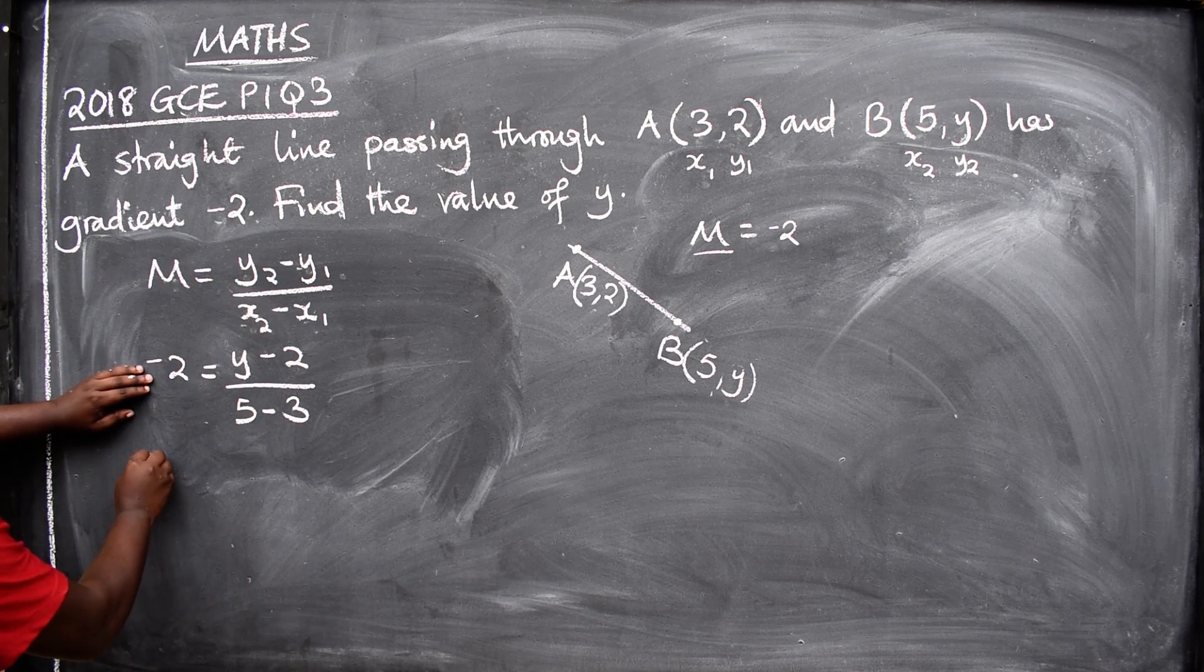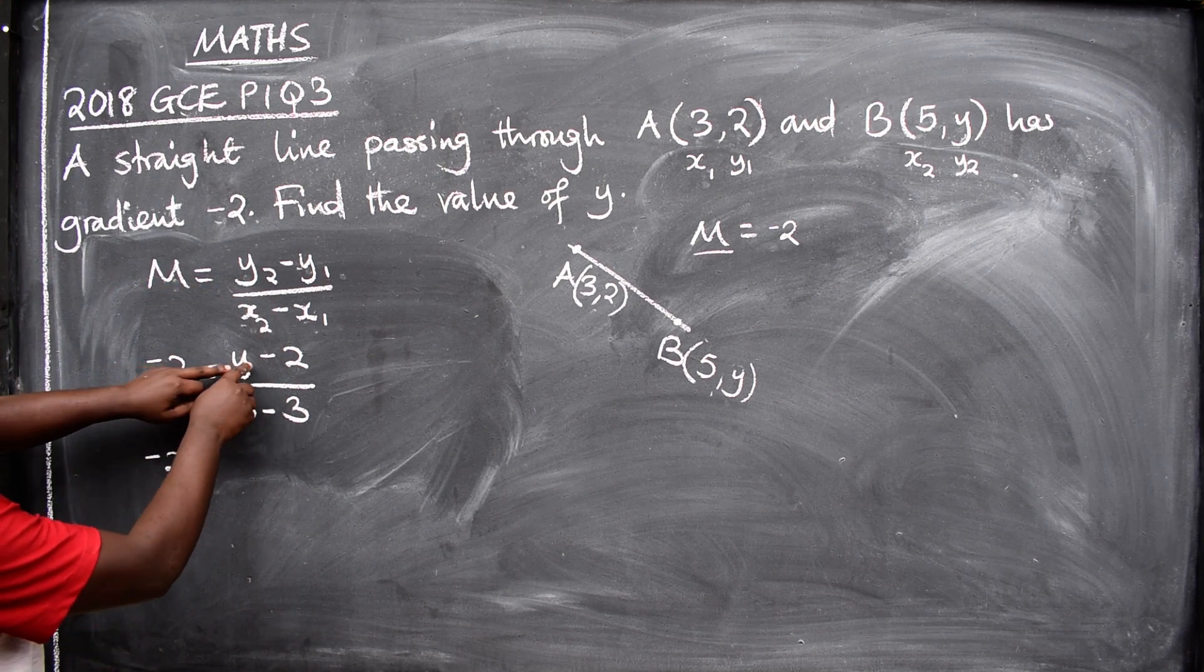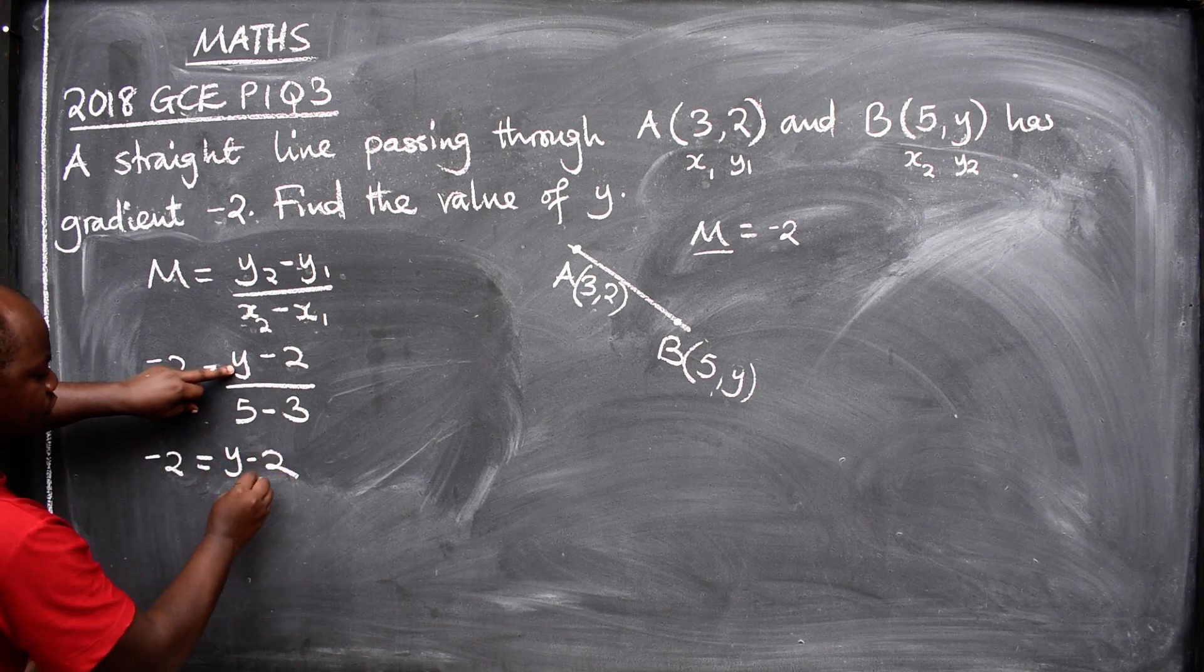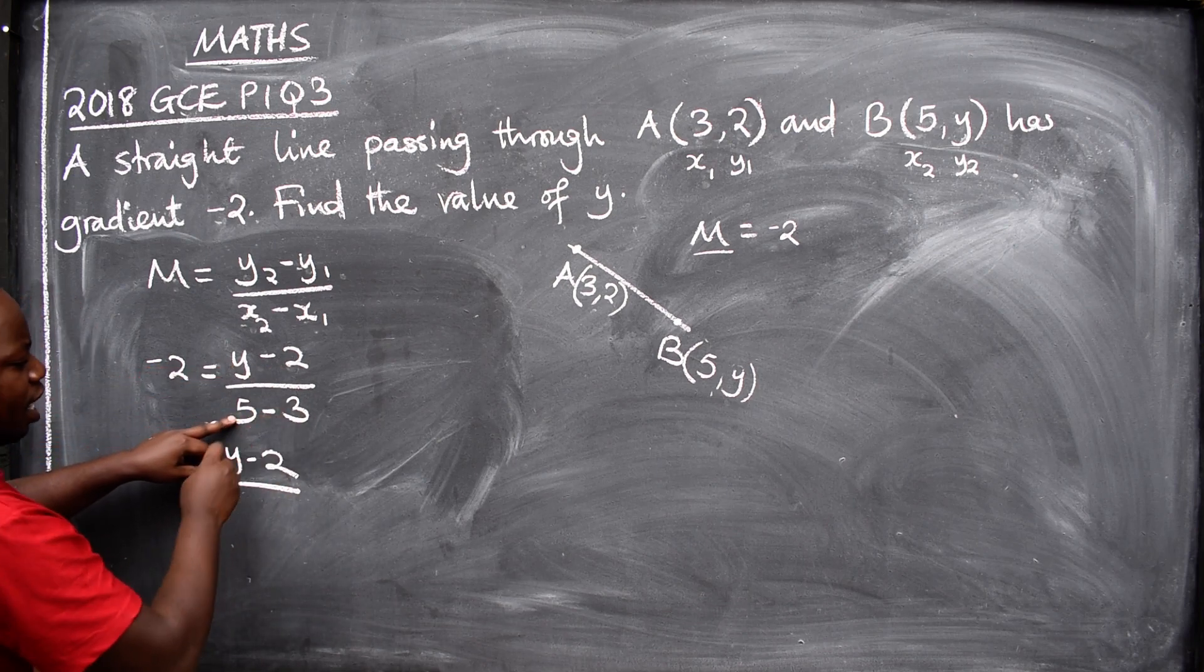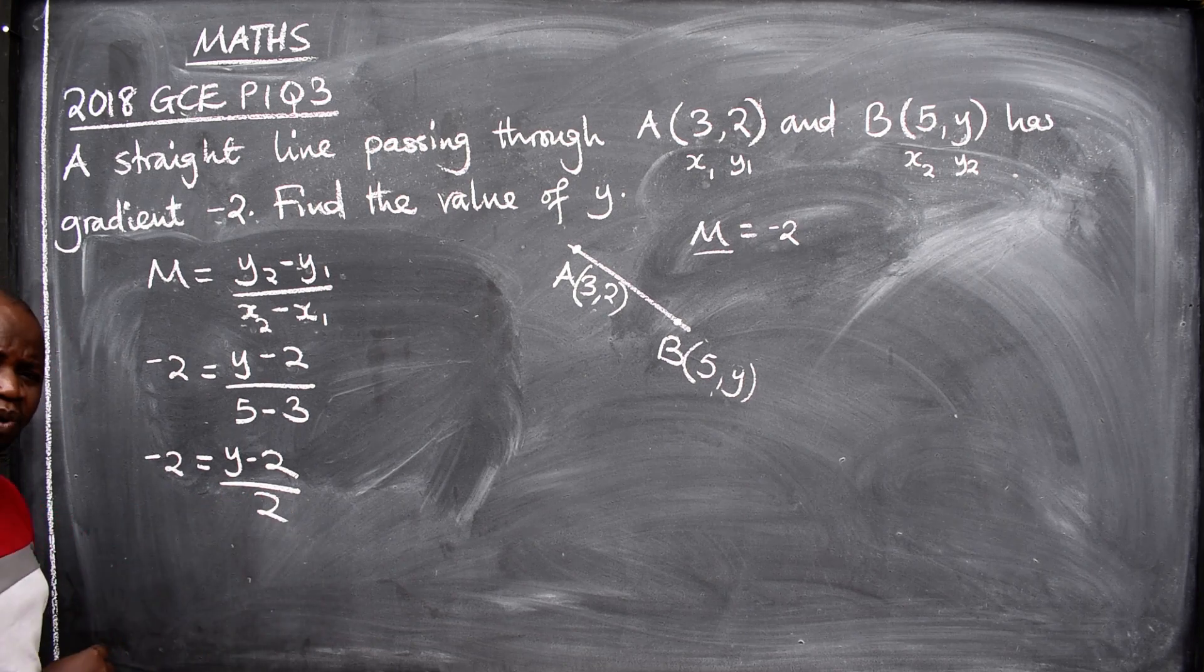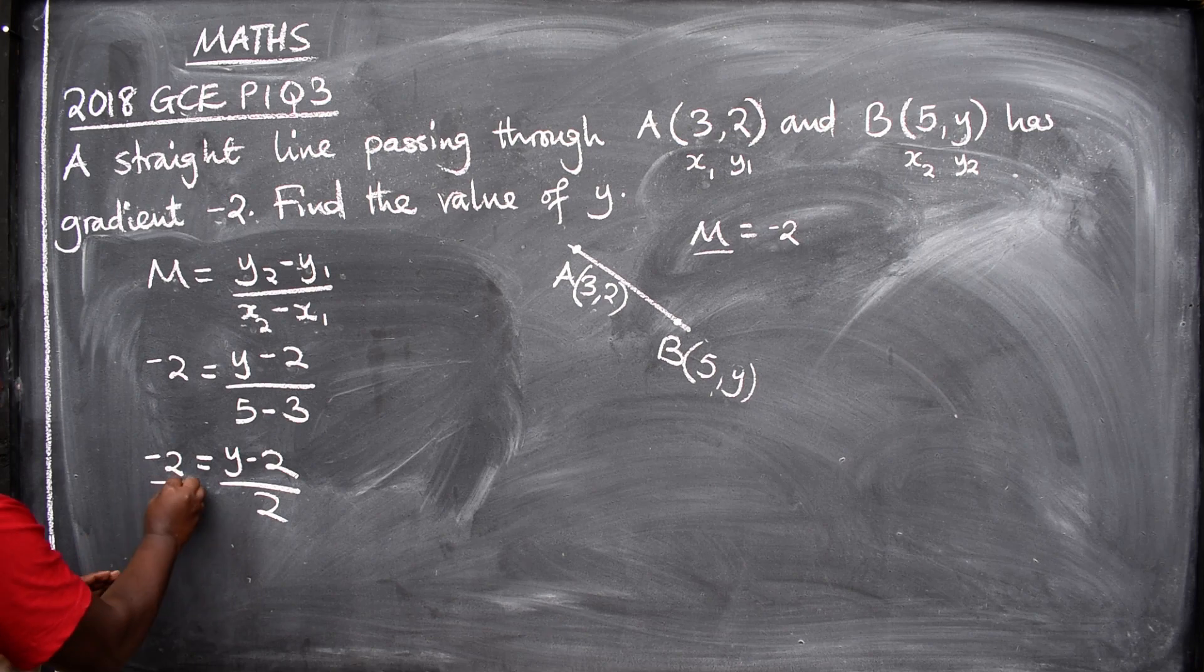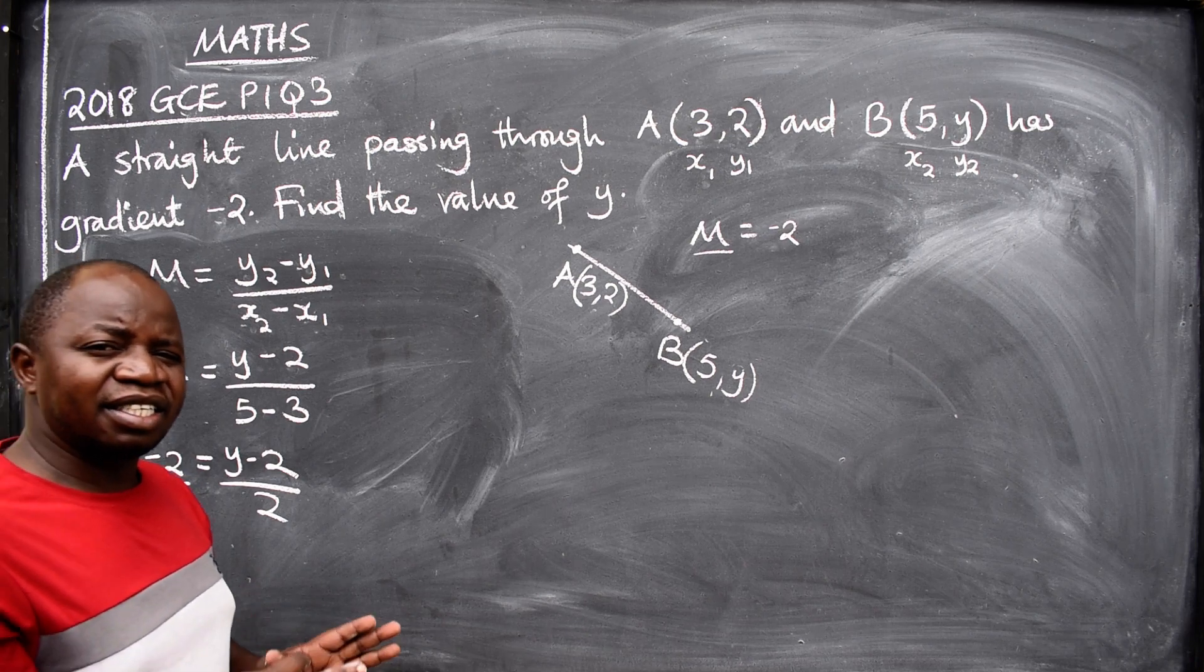At this point now, we are going to say -2 = (y - 2)/(5 - 3). This will give us -2 = (y - 2)/2. We have a fraction here, so we are going to make a fraction also on the other side: -2/1. Then you will be able to cross multiply.